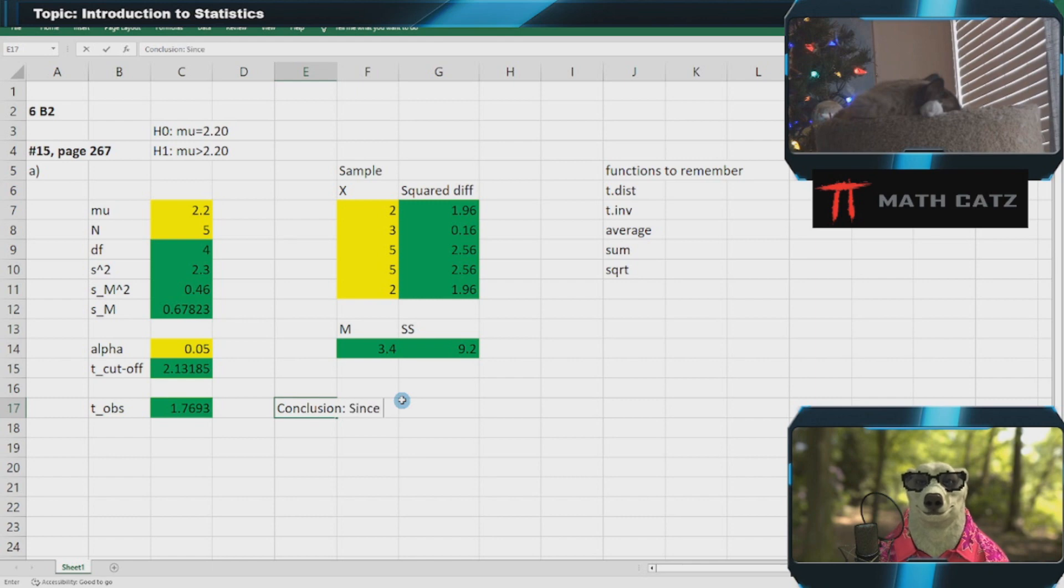Conclusion: Since the t observed is less than the t cutoff, we do not have strong enough evidence to reject the null hypothesis. Do not reject the null hypothesis. The evidence is not strong enough.